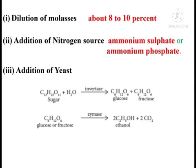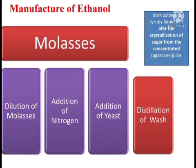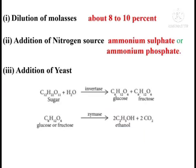Starting with 30% of sucrose, now the sugar level is decreased to about 8 to 10% in our solution. This solution then involves the second step: addition of nitrogen. Molasses already contains enough nitrogenous matter, but we are adding additional chemicals — specifically ammonium sulfate or ammonium phosphate. These substances act as food for yeast during the fermentation process, because the next step is the fermentation process.